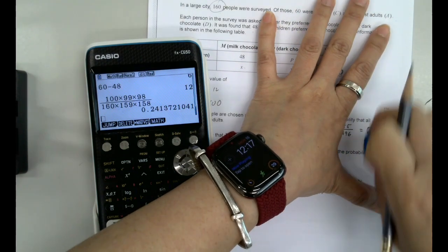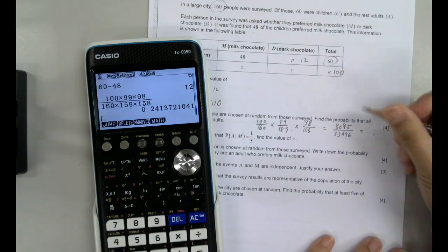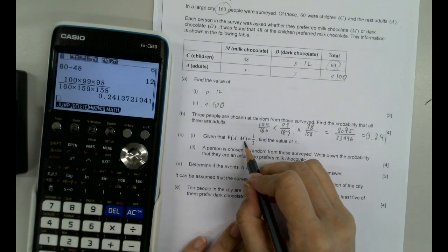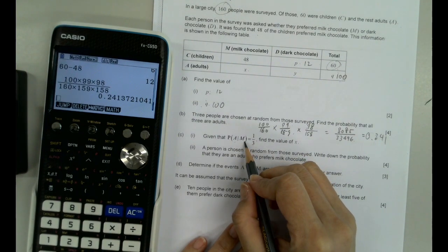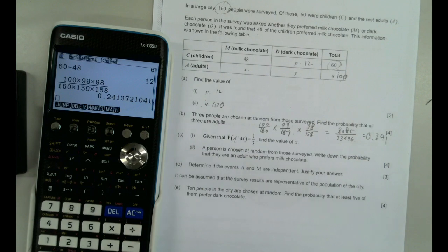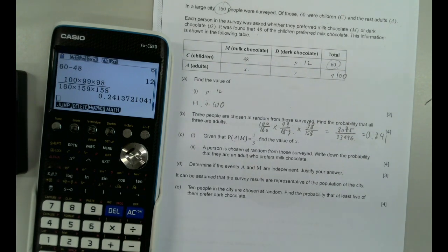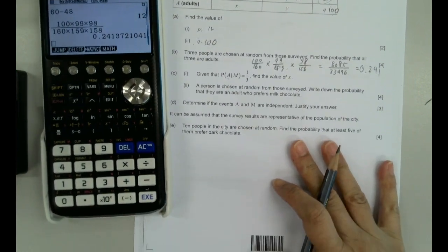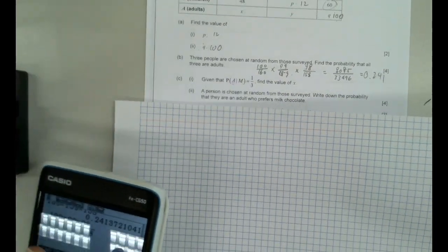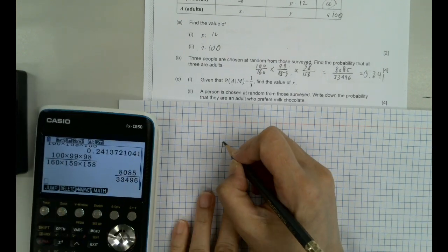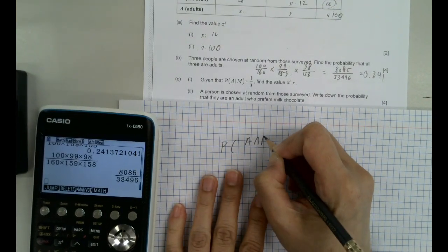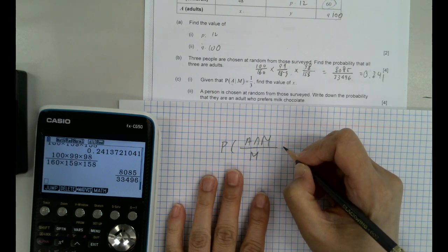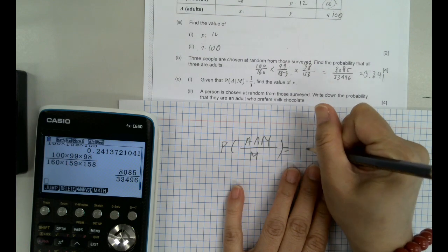Let me write nicely. Given that the probability of people who are adults, given that it's M, is 1 over 3. So we need to find out the probability of those. This time I really need paper for it. So here we go. So which is probability of A intersect M over probability of M equals to 1 over 3.